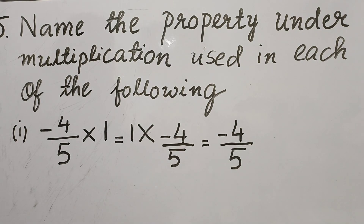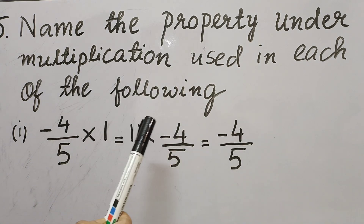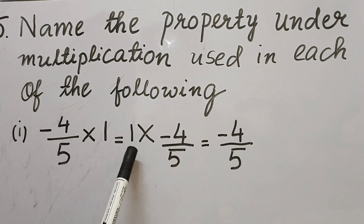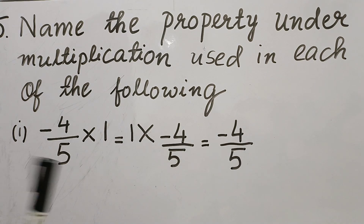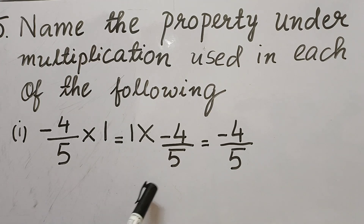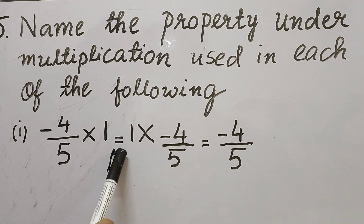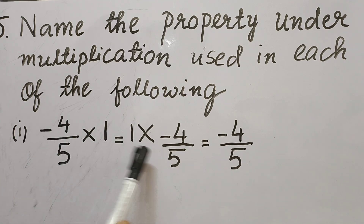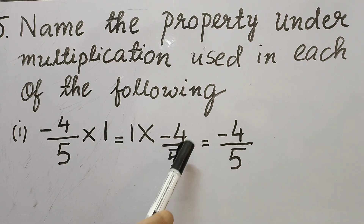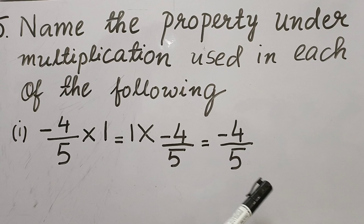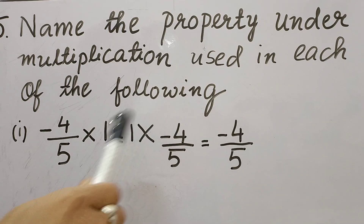Now let's solve Question 5: Name the property under multiplication used in each of the following. Part 1: (-4/5) × 1 = 1 × (-4/5) = (-4/5). Here, (-4/5) × 1 gives (-4/5), and 1 × (-4/5) also gives (-4/5). So 1 is the multiplicative identity in each case.